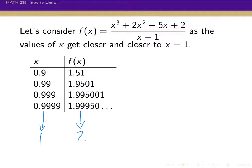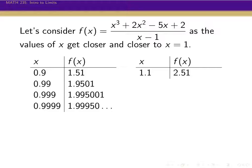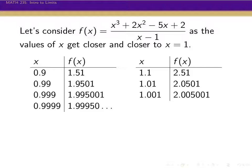So we've been looking at values that are less than 1. We can also be close to 1 but bigger than 1. If we plug in 1.1, so that's 1 tenth away, we get 2.51. If we plug in 1.01, we're at 2.0501. 1.001 gives us 2.005001. And 1.0001 gives us 2.00050. So on both sides — a little smaller than 1 and a little bigger than 1 — the values are getting closer and closer to 2.